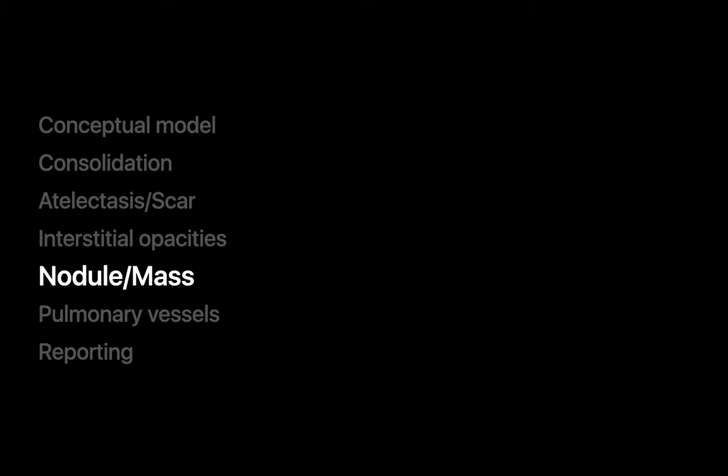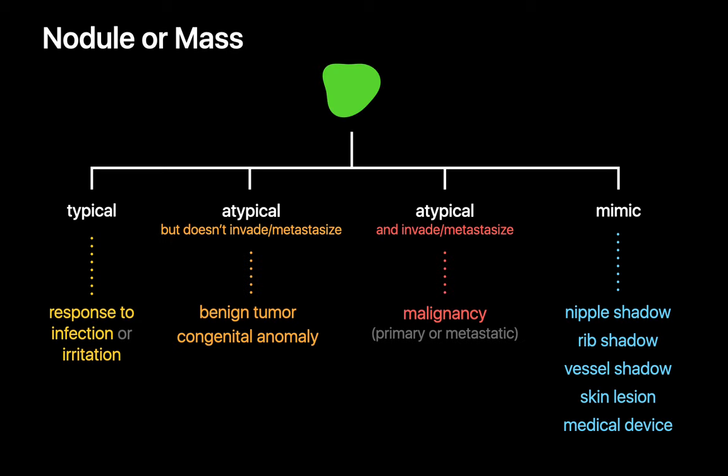Nodules or masses represent a lump within the lung parenchyma. We use three centimeters as the size threshold for differentiating a nodule from a mass. There are four explanations for an apparent nodule or mass on chest x-ray: a typical response to lung infection or irritation; an atypical proliferation of tissue, either benign congenital lesions or malignant tumors; or — perhaps most commonly — what we're actually seeing is a lung nodule mimic such as a nipple shadow, an overlapping rib shadow, a vascular shadow, a skin lesion, or a medical device like a plastic chest port.